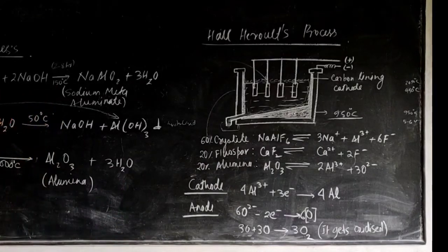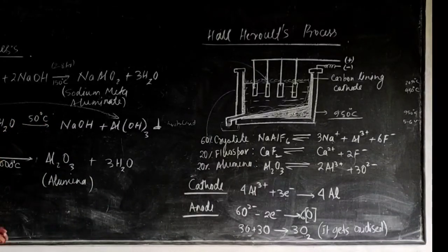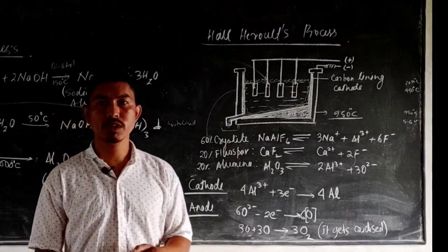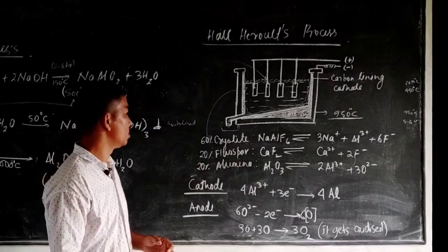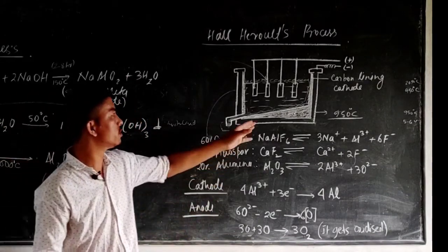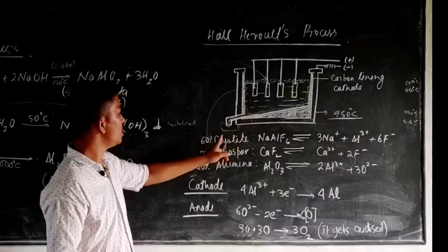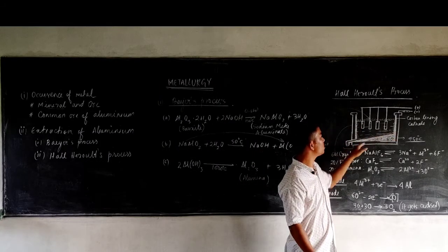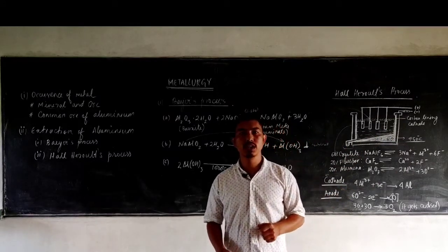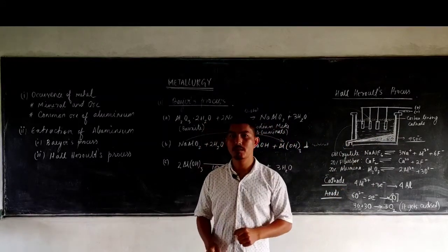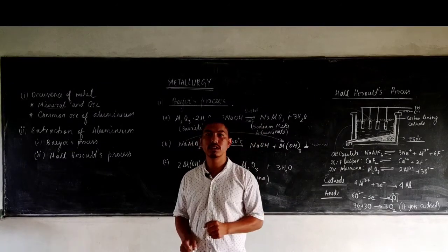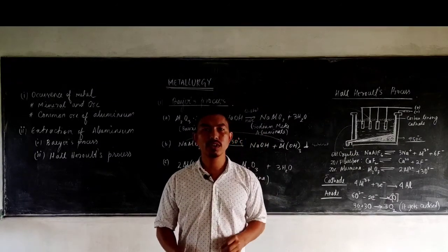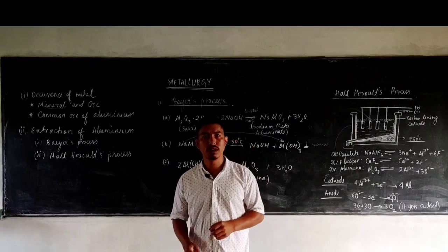So this is all involved in the extraction of aluminium — the Bayer's process for extraction of alumina from bauxite, followed by the electrolytic reduction in the Hall-Héroult's process to obtain aluminium. Learn these in detail, especially the diagram and the reason for each component — why cryolite is used, why fluorspar is used, and why the bottom is inclined. If you have any queries, you are always free to ask. Thank you.